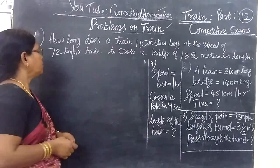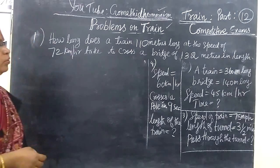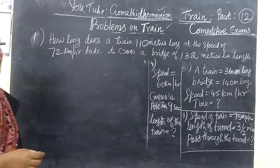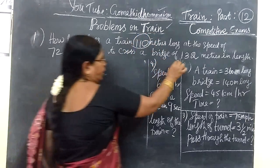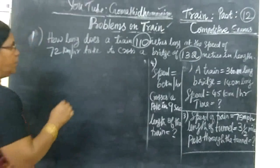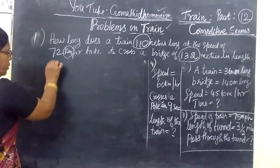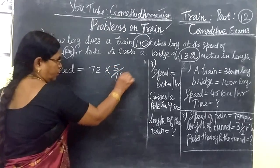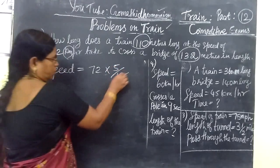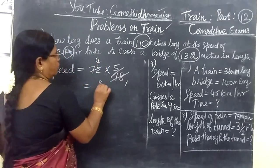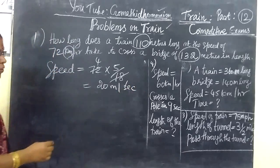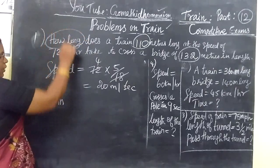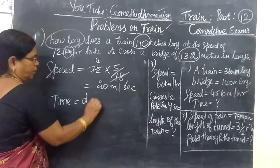How long does a train 100 meters long at the speed of 72 kilometers per hour take to cross a bridge of 132 meters in length? From the previous class, you know to add sum of these distances. The unit is meter. Here it is given in kilometers per hour. Speed is meter per second, so 72 kilometers per hour into 5 by 18 equals 20 meters per second. So speed is converted. Now you have to find the time taken.